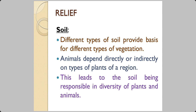India has different types of soils — black soil, red soil, yellow soil, alluvial soil, desert soil, mountain soil, and so on. These soils support different varieties of plants, and the variety of plants influences the variety of animals in that region. So we can say that soil is also responsible for biodiversity.